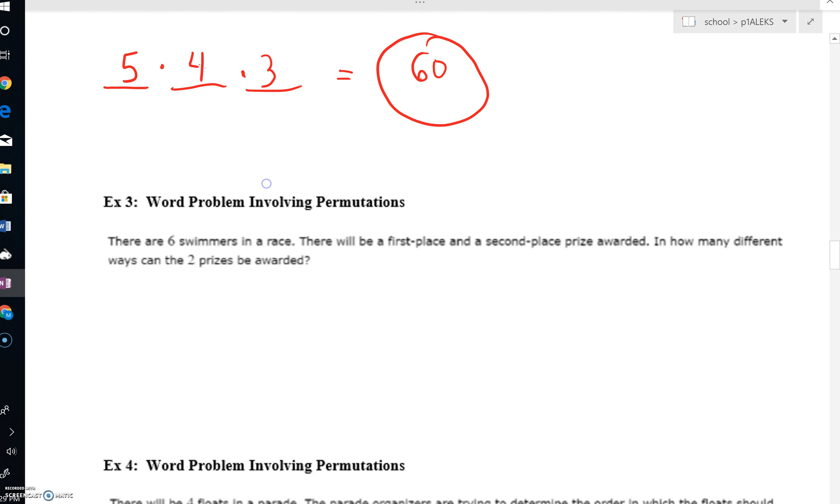Take a look at example three. There are six swimmers in a race. There will be a first place and a second place prize awarded. So we've got first. We've got second. In how many different ways can the two prizes be awarded?